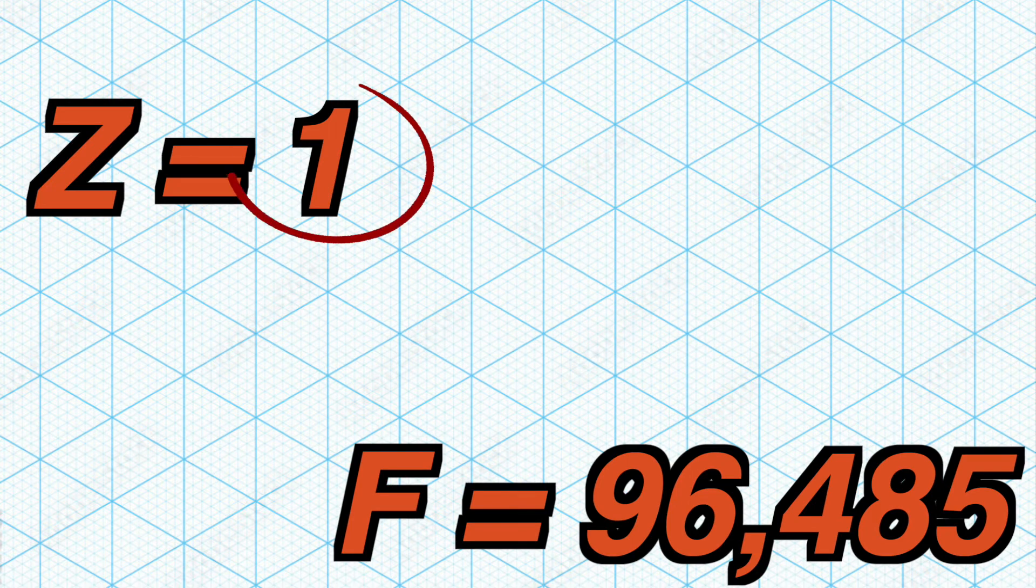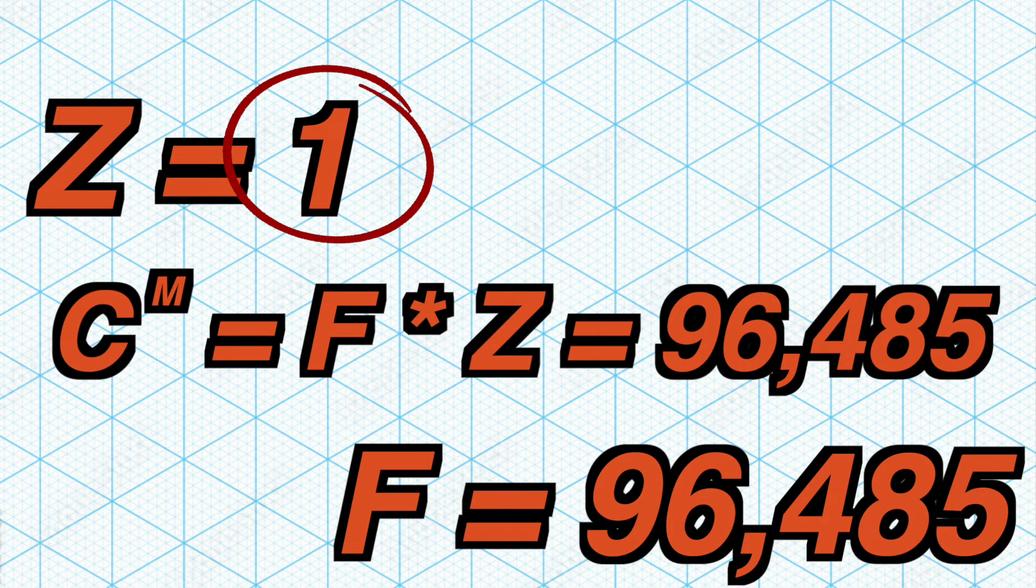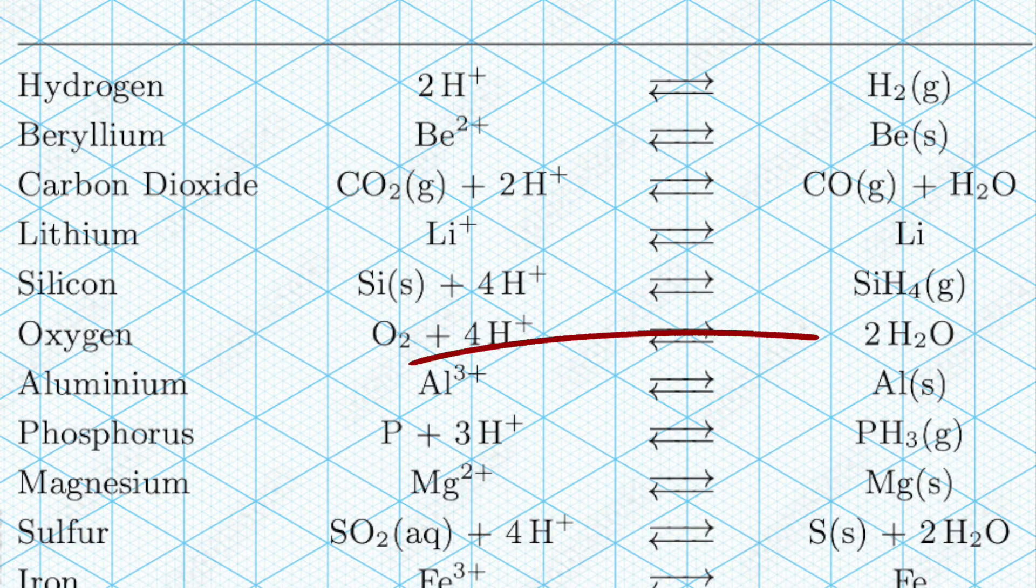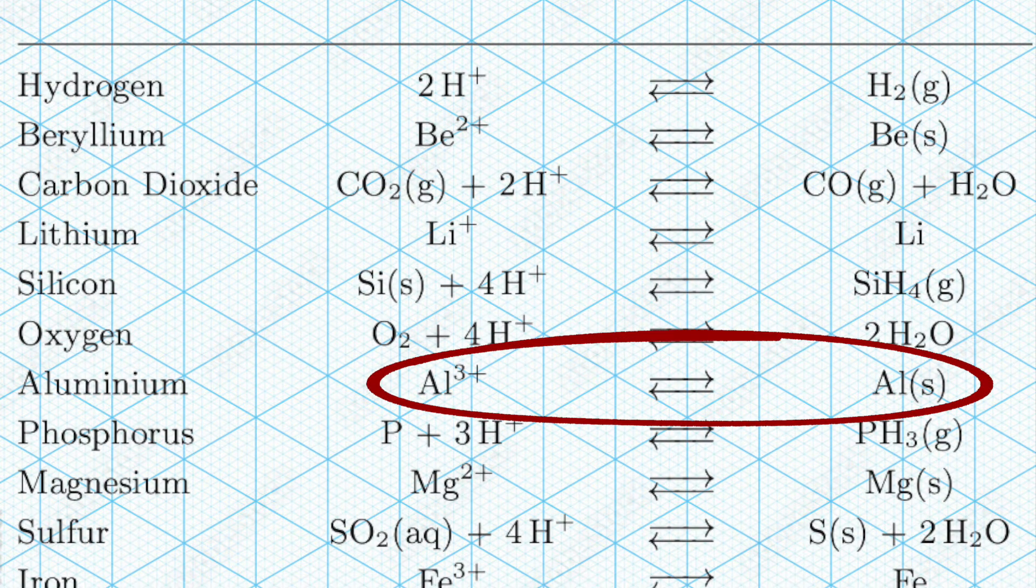In this case, because the number of electrons that are transferable through the redox reaction is one, the Faraday constant is equal to the molar capacity. But this isn't always the case. For example, aluminum is able to spare three electrons, which changes this to multiply it by three.